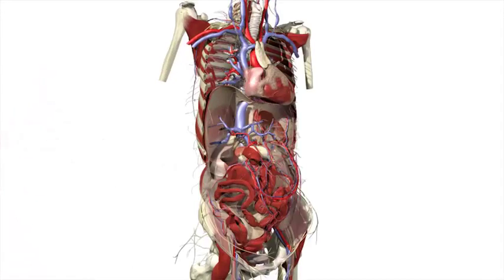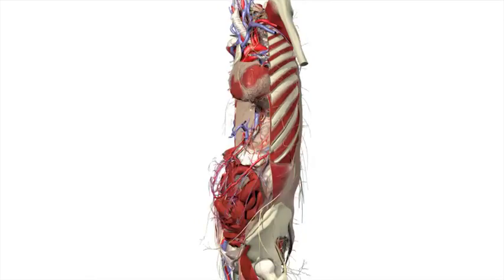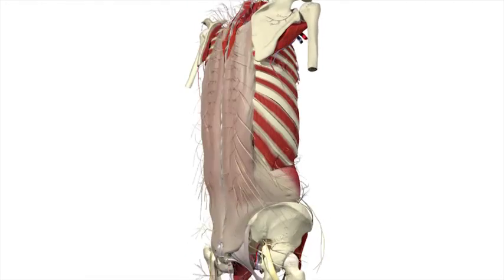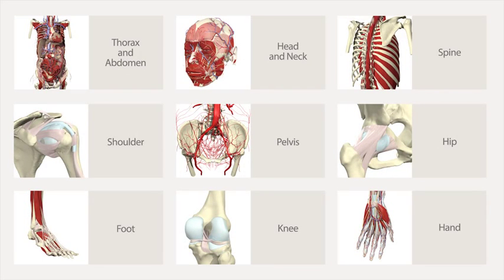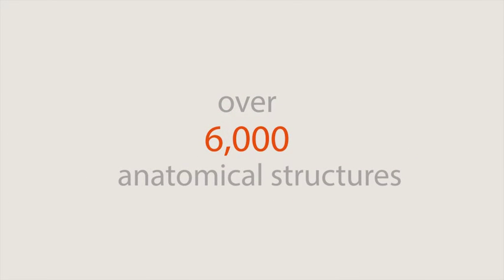Renowned for accuracy, Primal's hugely detailed anatomy models are built from real scan data. Made up of nine regionally focused titles covering the entire human body with over 6,000 anatomical structures.